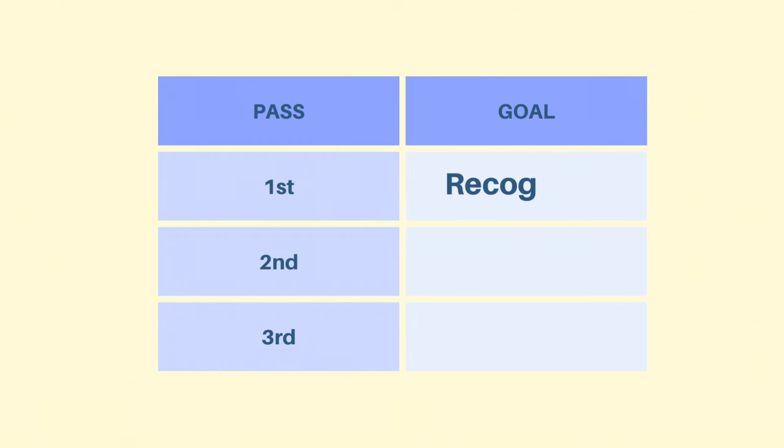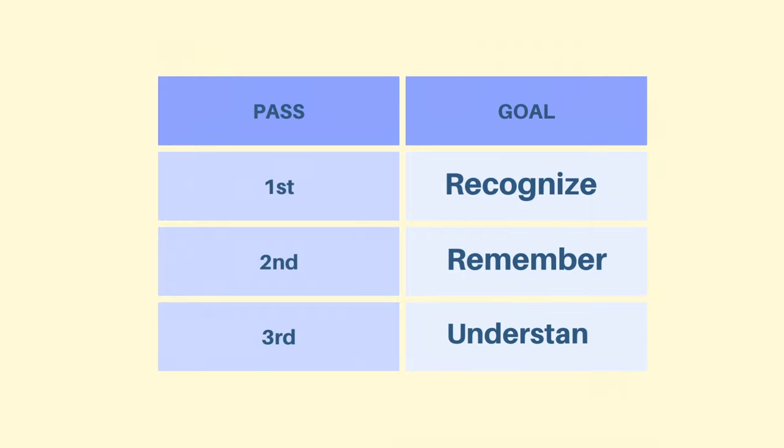Now let's get into the nuts and bolts. There is a simple note-taking framework for understanding a high volume of material that I use in medical school — it's called the three-pass approach. The idea is that it takes three passes of each lecture for your understanding of the material to gradually come into focus. Each pass serves a specific purpose: after the first pass you'll be able to recognize the material, after the second pass you should be able to remember it, and after the third pass you'll be able to understand it.